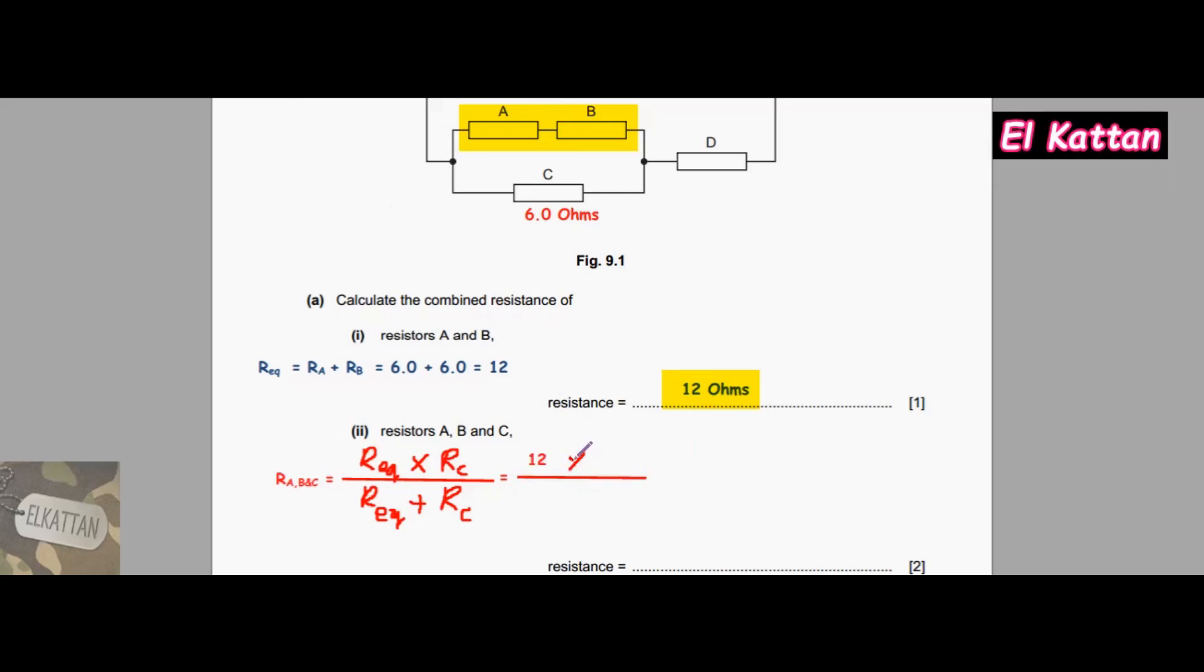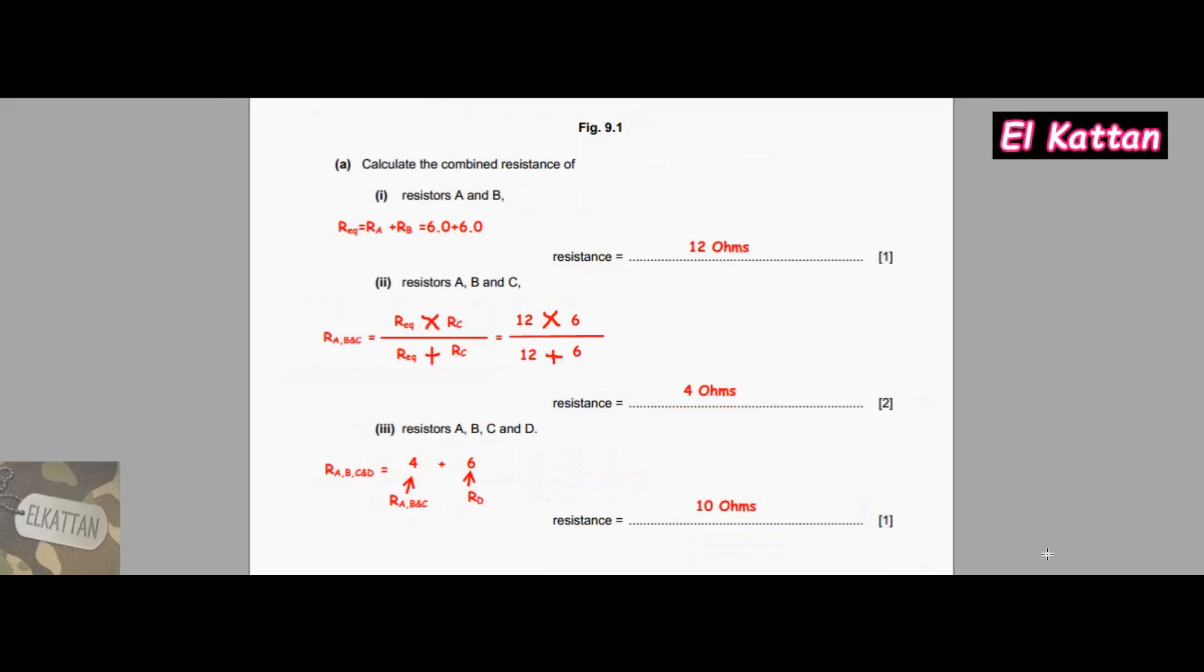For part (a)(iii), the total resistance of A, B, C, and D equals the resistance from the previous part, which is 4 ohms for A, B, and C, added to the value of resistance D, which is 6 ohms, because they are in series. So 4 + 6 = 10 ohms.